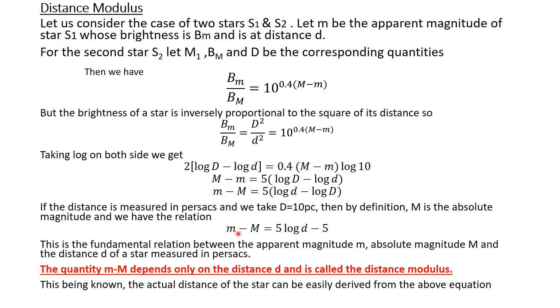The quantity m − M, that is apparent magnitude minus absolute magnitude, depends only on the distance d and is called the distance modulus. If we know this, we can easily calculate the distance of a star from us, provided we know its apparent magnitude and absolute magnitude.